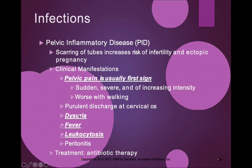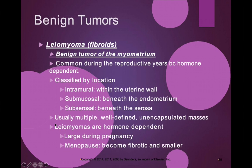Additional symptoms of PID include dysuria, fever, and leukocytosis. So the first sign is usually pelvic pain, followed by painful urination, fever, and increased white blood cells. The treatment for PID is antibiotic therapy.